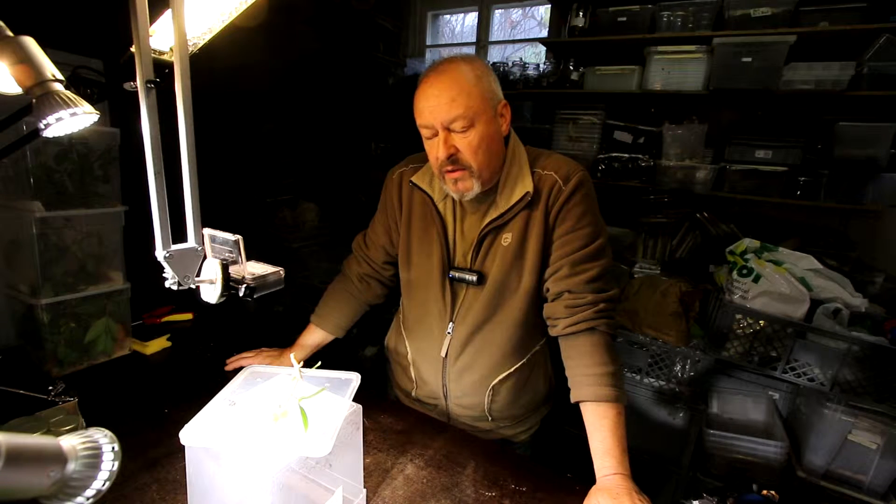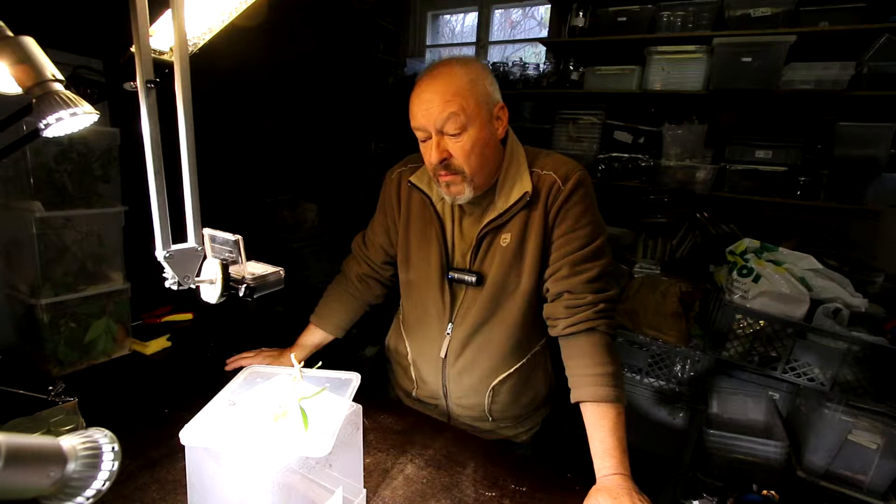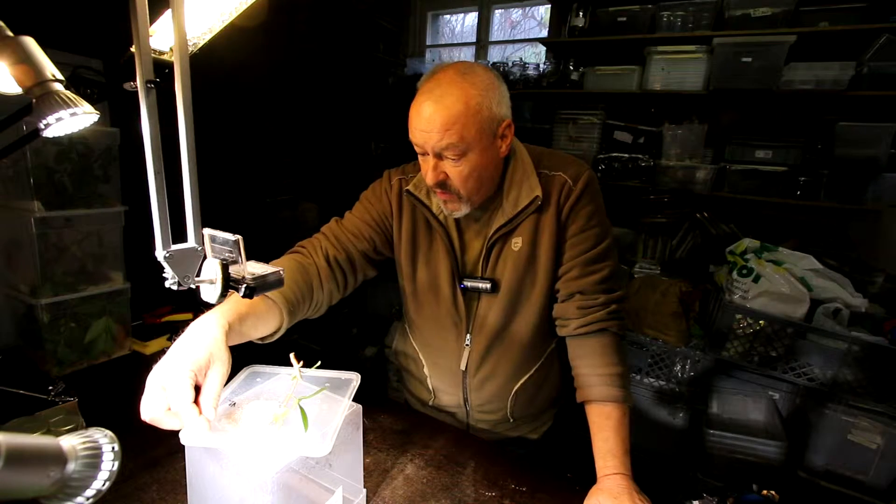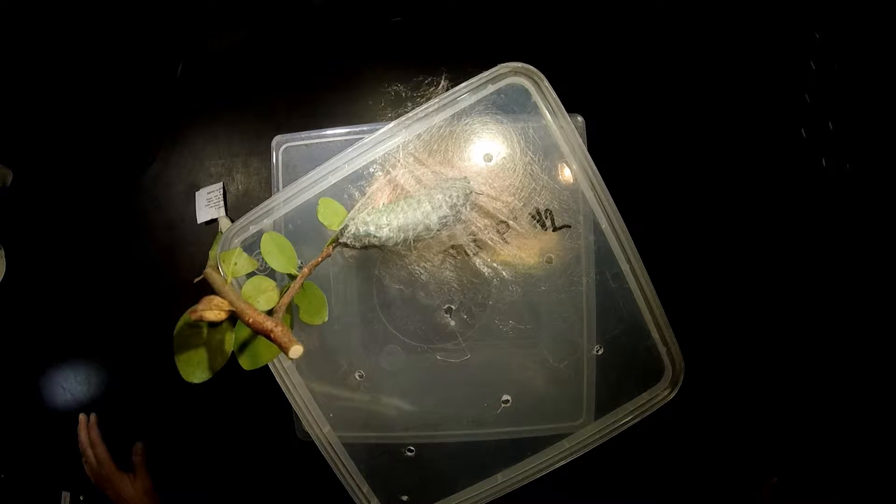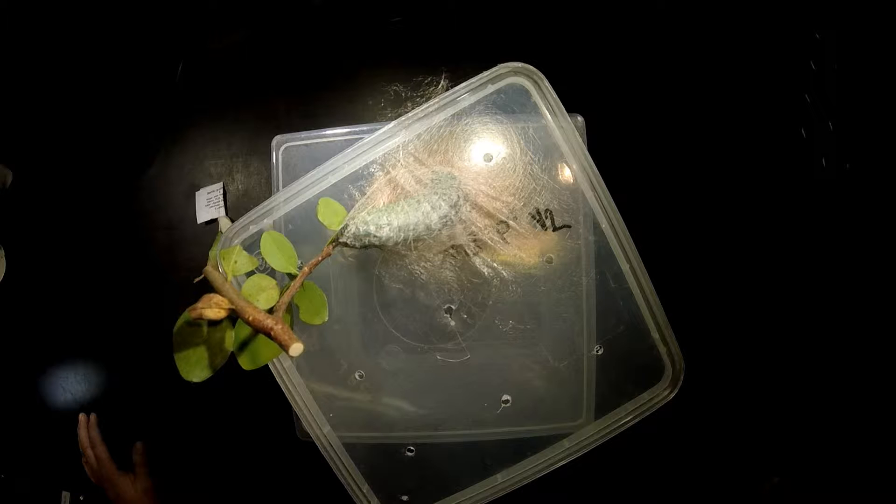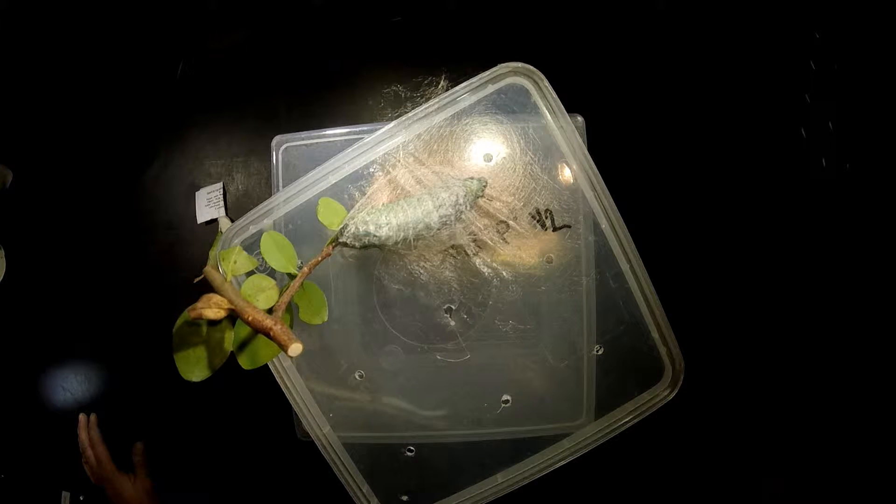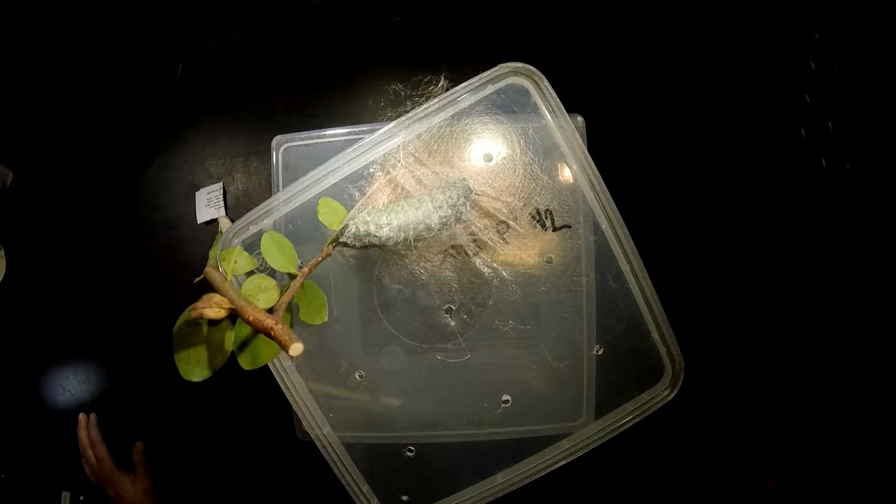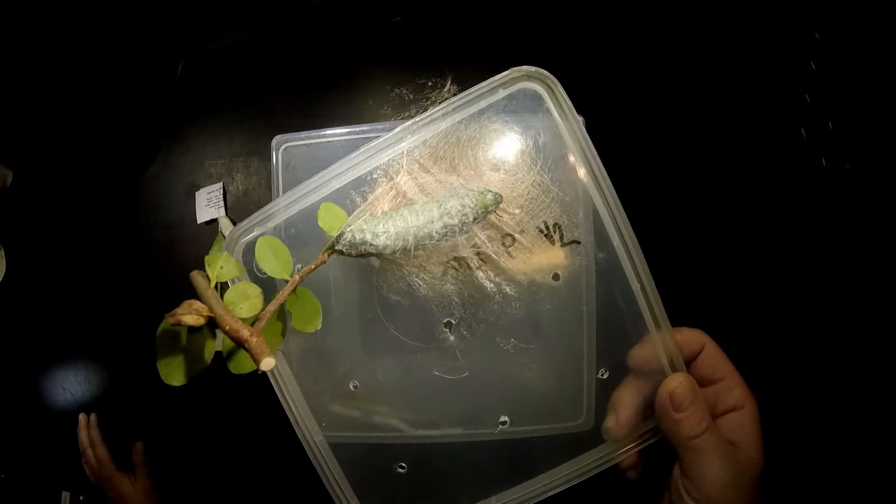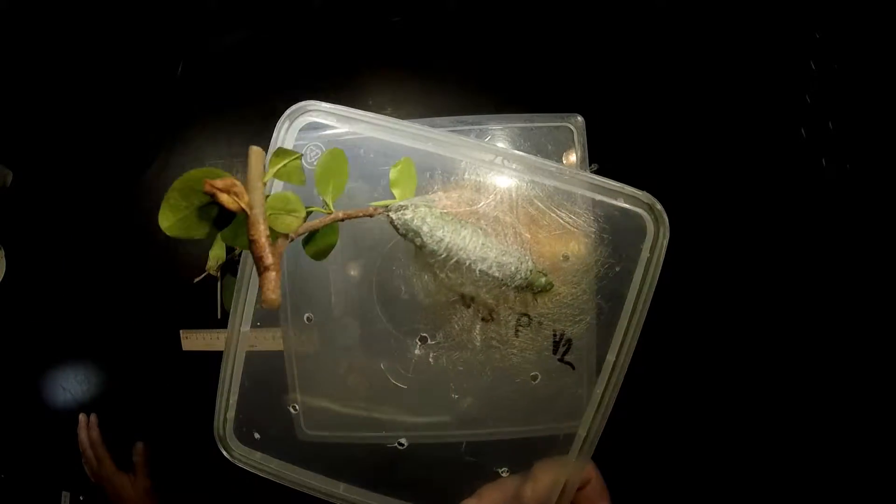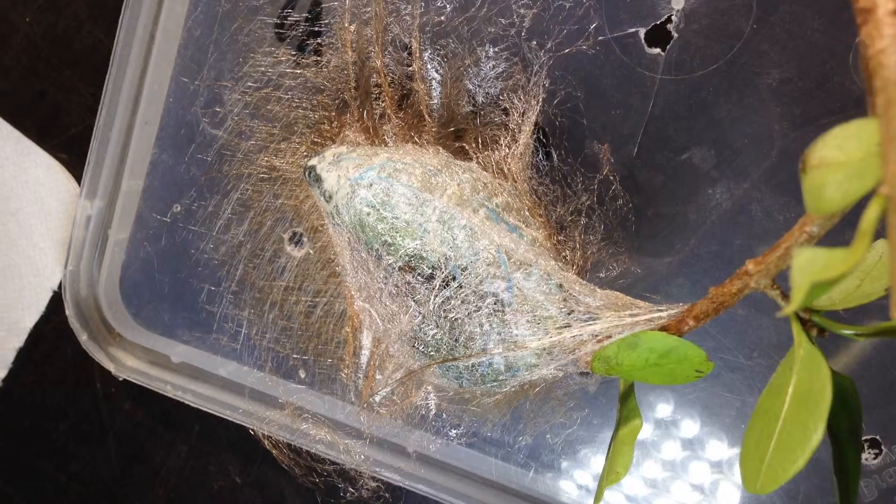The first caterpillar started making their cocoon with this Fagora silk, kind of a reddish-brown color. I also have some macro videos about how they do it, and you can see it here on the lid of one of these plastic containers where the caterpillar starts now to build the cocoon.